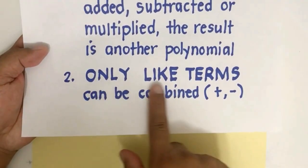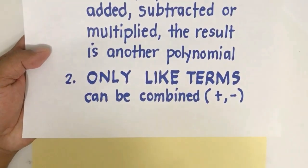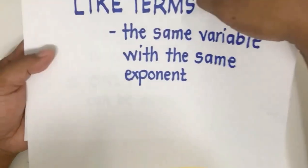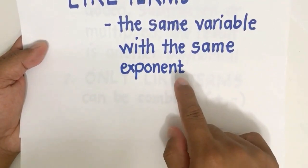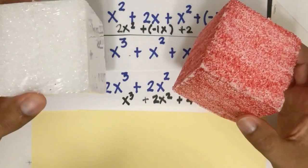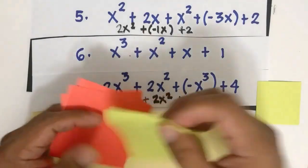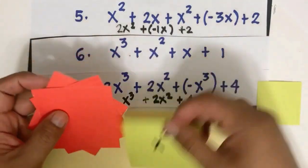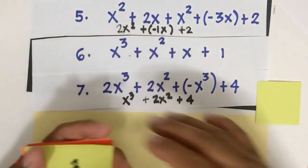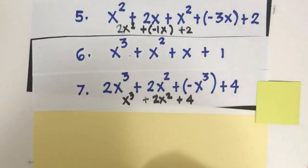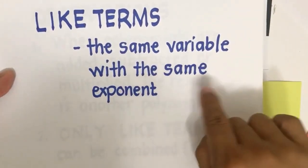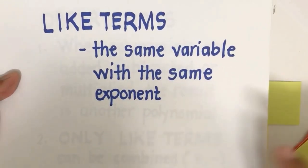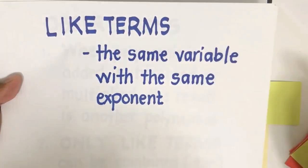When polynomials are added, subtracted, or multiplied, the result is another polynomial — we call that the closure property. During the operation, only like terms can be combined. Like terms are those terms with the same variable and the same exponent. You can only add x cubed with another x cubed, x squared with another x squared — they must be of the same kind.